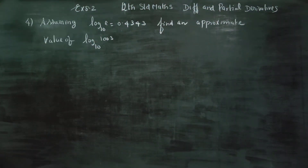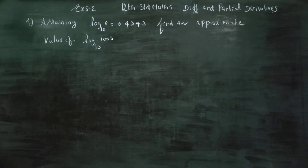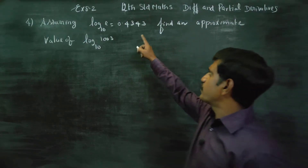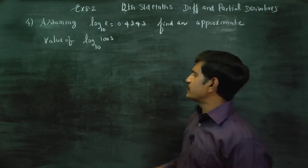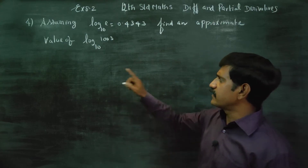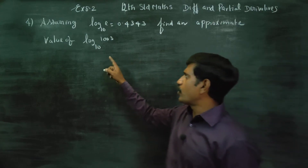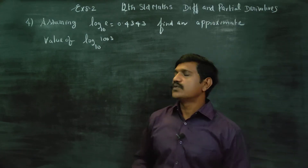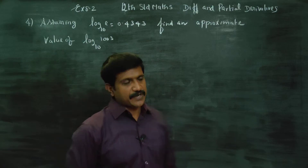Dear 12th standard students, in exercise number 8.2, sum number 4, log e base 10 is equal to 0.4343. Find the value of log 1003 base 10.